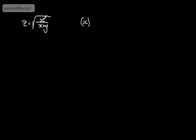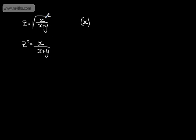I can see that X appears in the numerator and the denominator, and this is all under the square root. The first thing I'm going to do is square both sides, so that will give me Z squared is equal to X over X plus Y. If I square the square root, I simply end up with the quantity that was under the root.